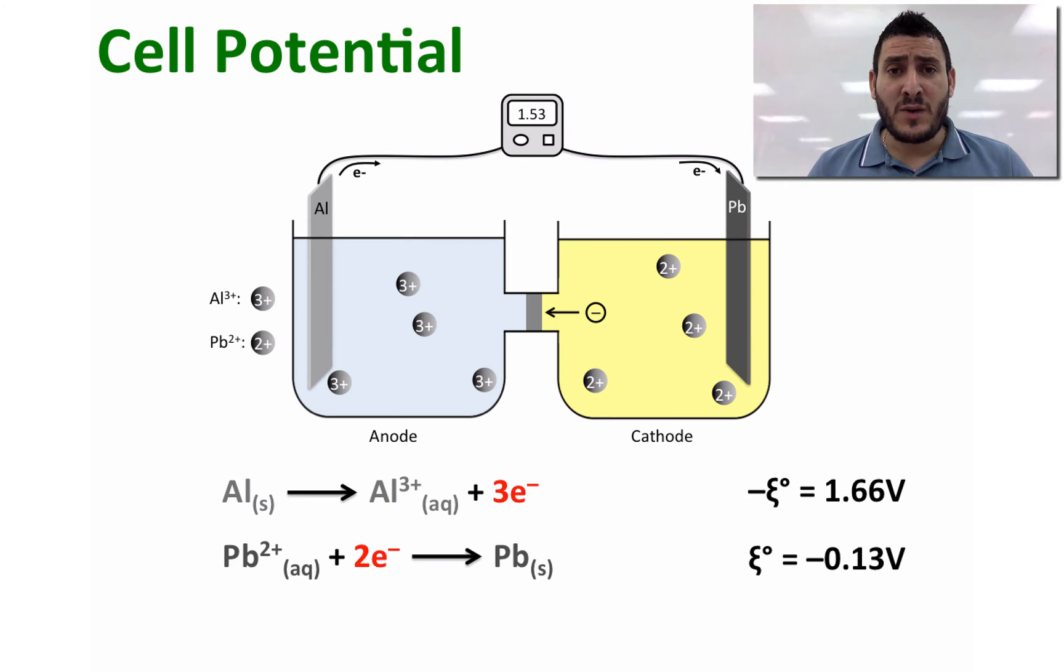Now to sum these two half equations, as you know from balancing a redox reaction, we need to multiply by two integers. We need to multiply by two the half equation of aluminum and by three the half equation of lead.